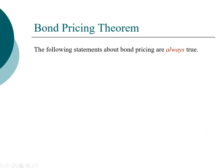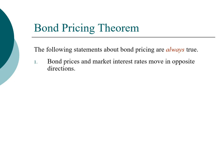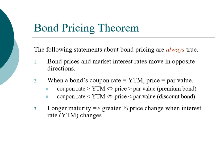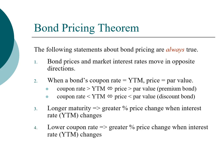Here's a summary of all the bond pricing theorems discussed. First, bond prices and interest rate yield to maturity always move in opposite directions. When the bond's coupon rate equals the yield to maturity, the bond sells at par. When the coupon rate is greater than yield to maturity, the bond sells at a premium. When the coupon rate is lower than yield to maturity, the bond sells at a discount. Finally, a longer-maturity bond has greater price risk when interest rate changes, and a lower coupon bond also has greater price risk when interest rate changes.